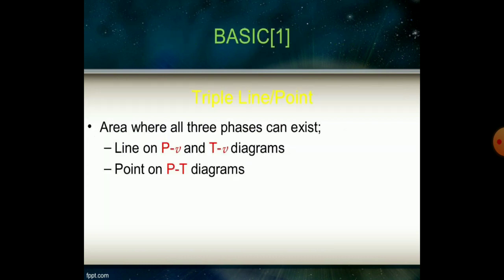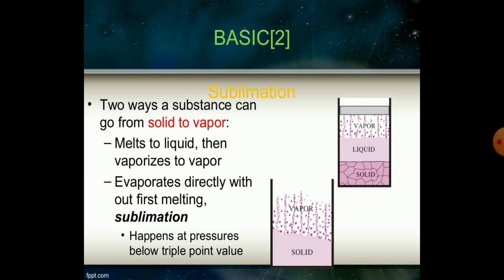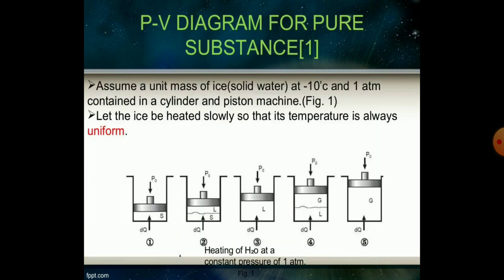The triple line point we can say is the area where all three phases can exist, that is on P-V diagram and temperature-volume diagram. The point at which all three phases can exist. Now, two ways a substance can go from solid to vapor: it melts to liquid then vaporizes to vapor, or it evaporates directly without first melting. Sublimation happens at pressure below the triple point value for solid, liquid, and gases.